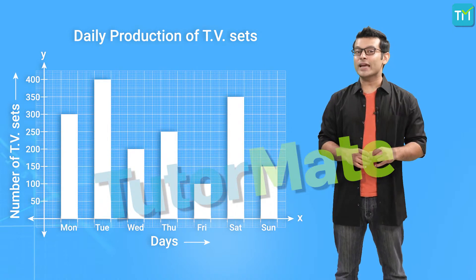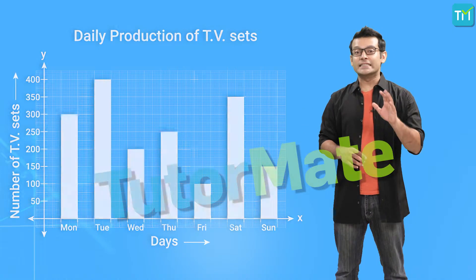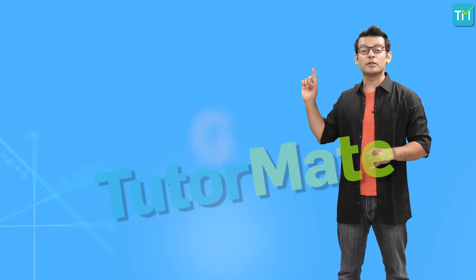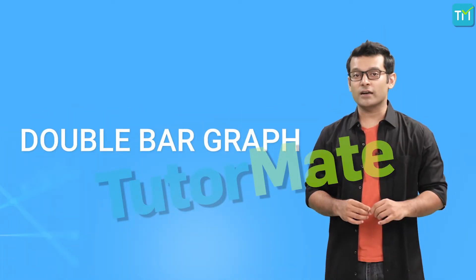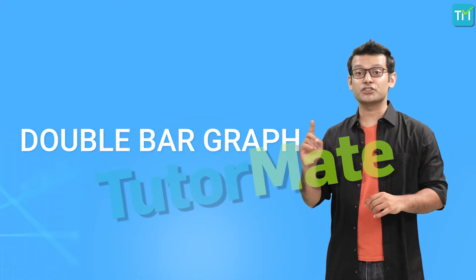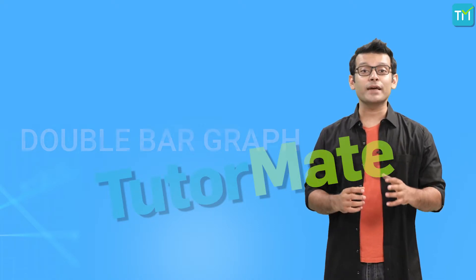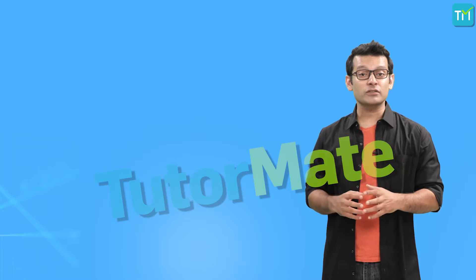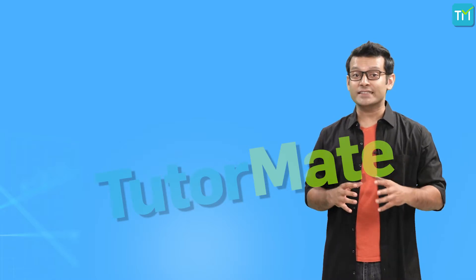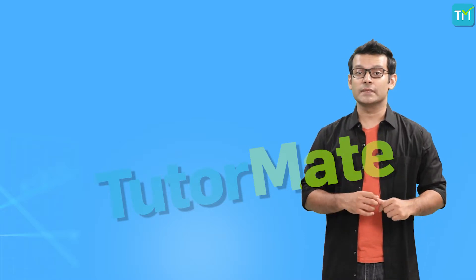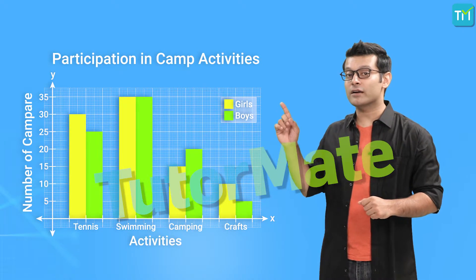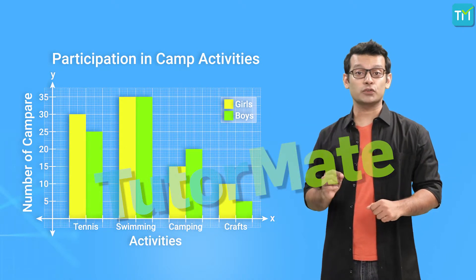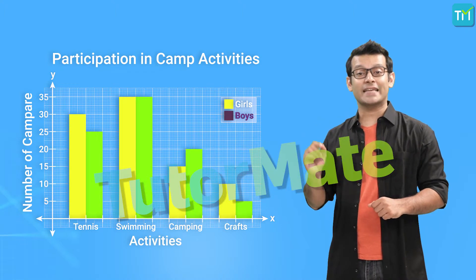Now let us look at another form of depicting data called the double bar graph. Double bar graphs, also called double bar charts, help us to compare or present more than one kind of information, situations or events instead of just one. This diagram of a double bar graph compares interests in various sports on a camp amongst boys and girls.